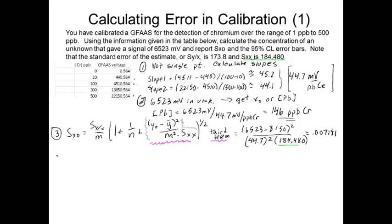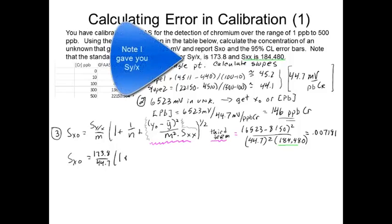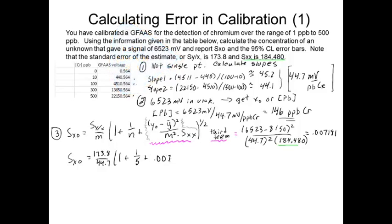Now, finally then, we're going to calculate our SX0, and that's just going to be equal to our SYX, 173.8, divided by 44.7, 1 plus 1 over 5, plus our third term, everything to the one-half power, and when I calculated that all out, I got 4.27 parts per billion.